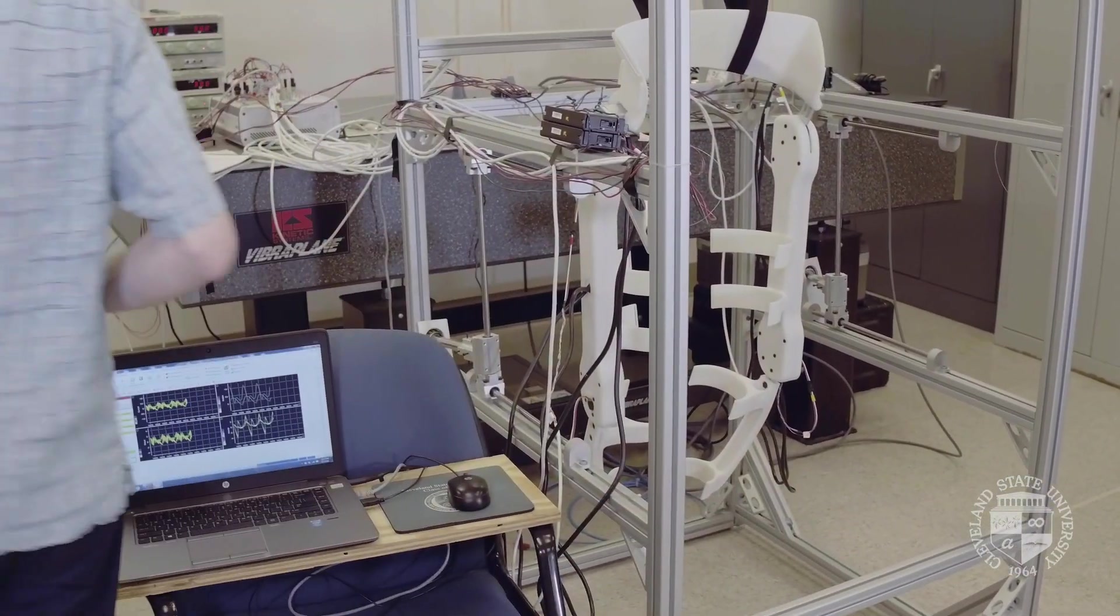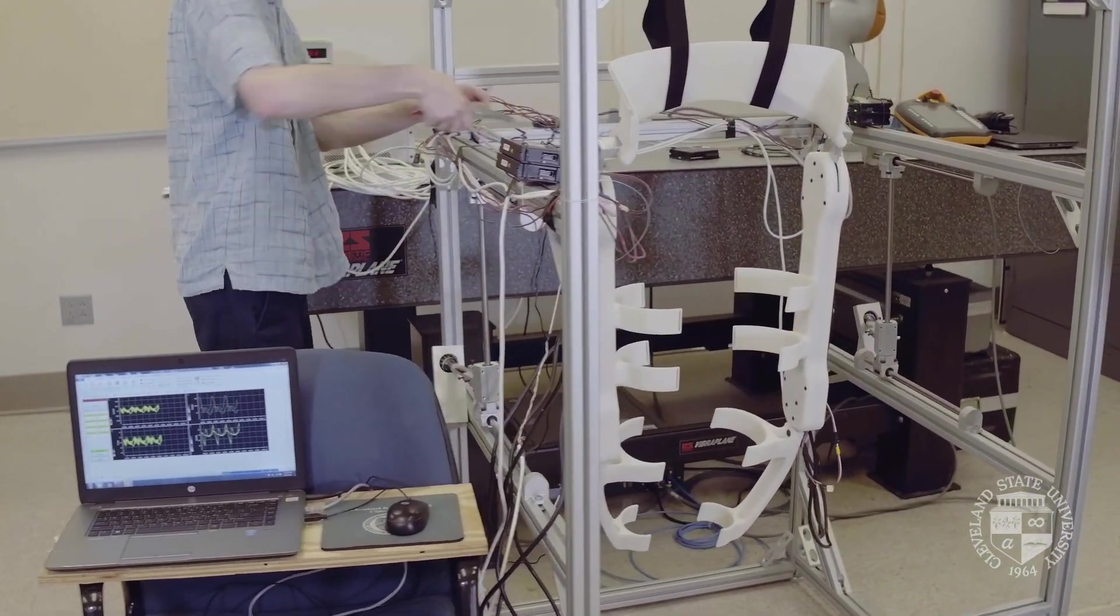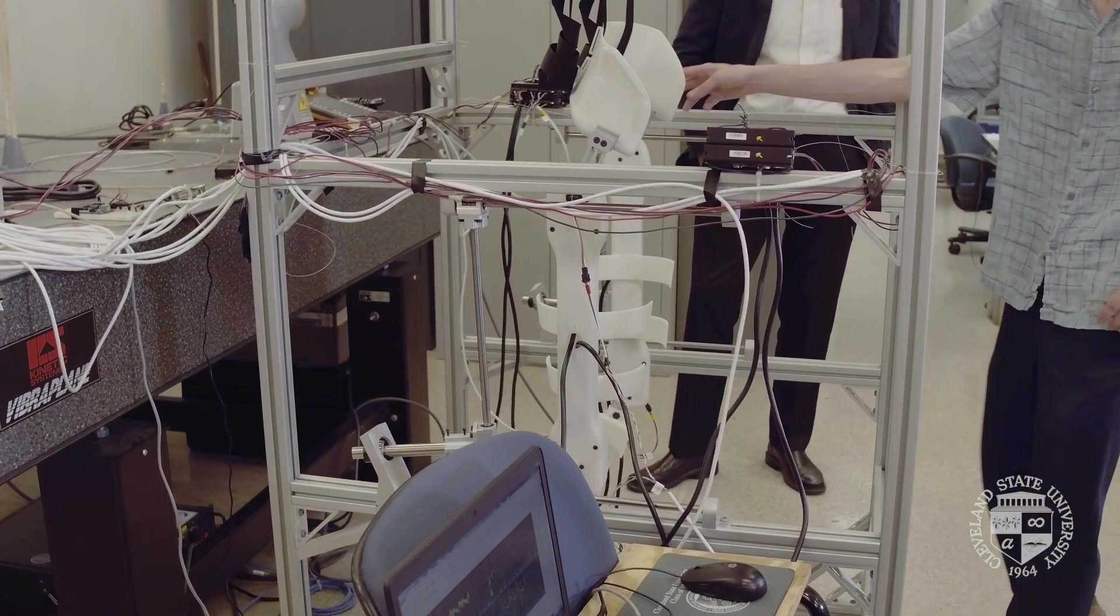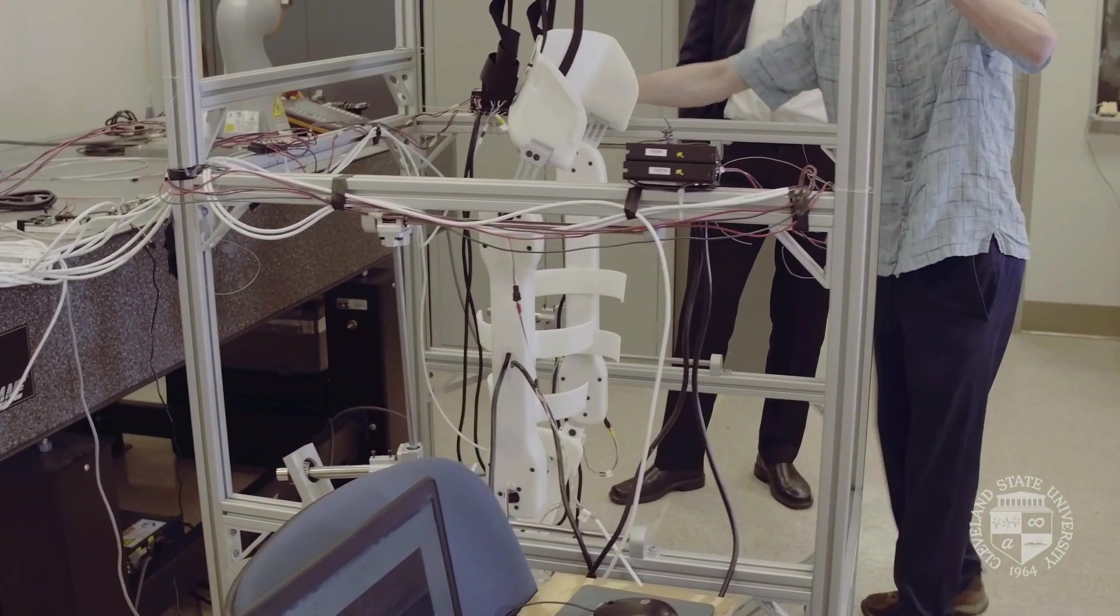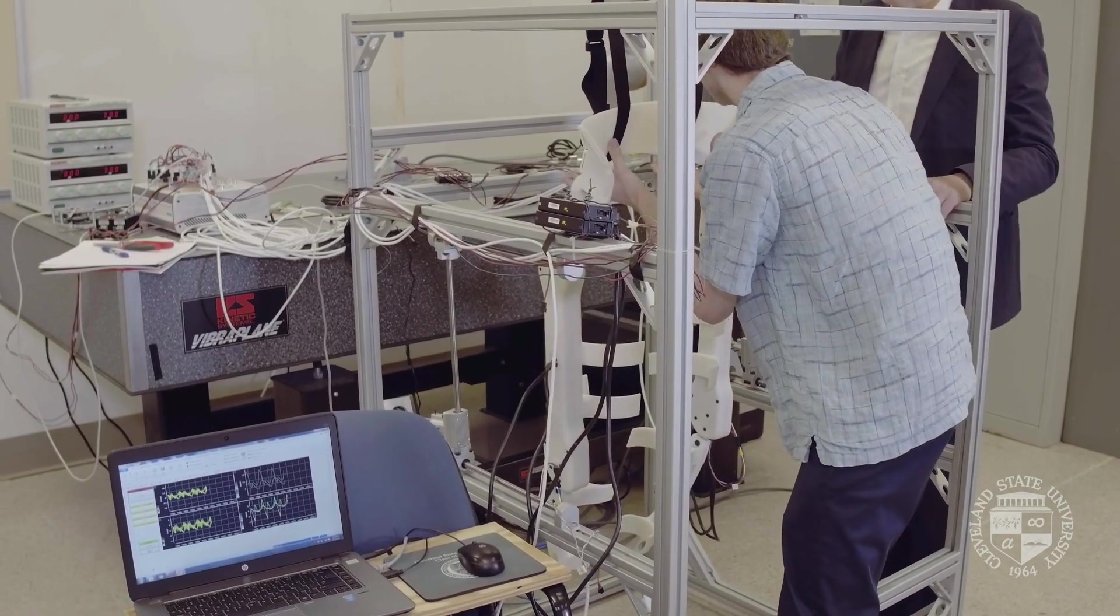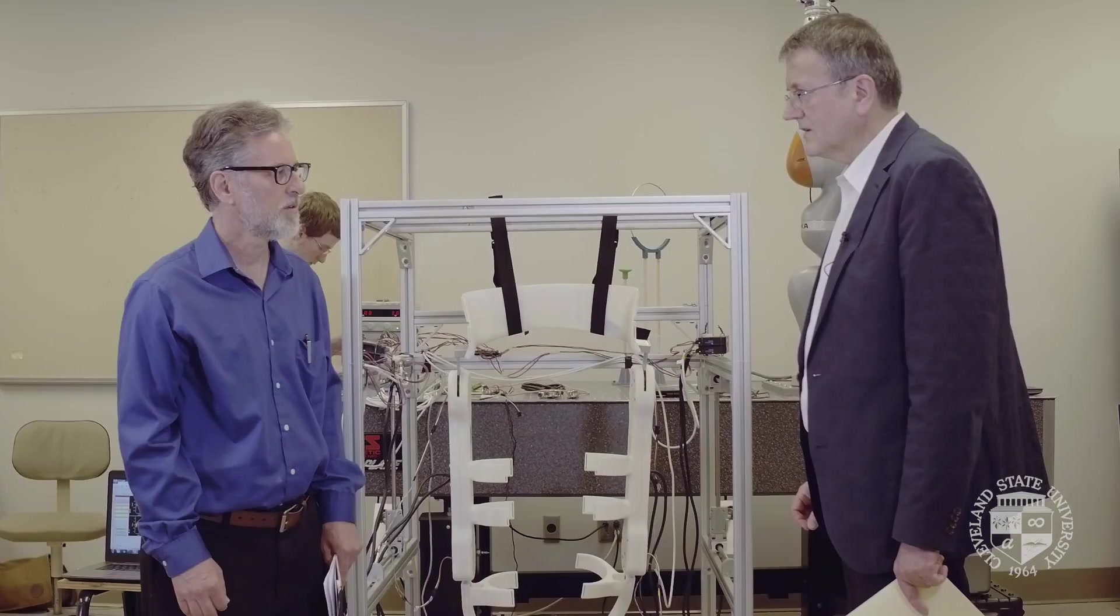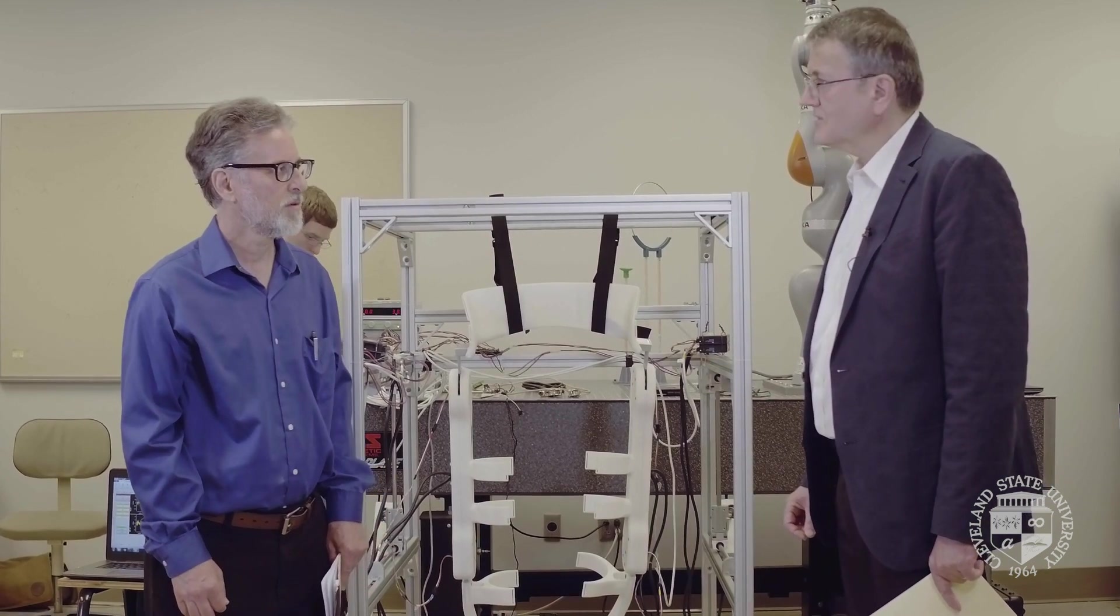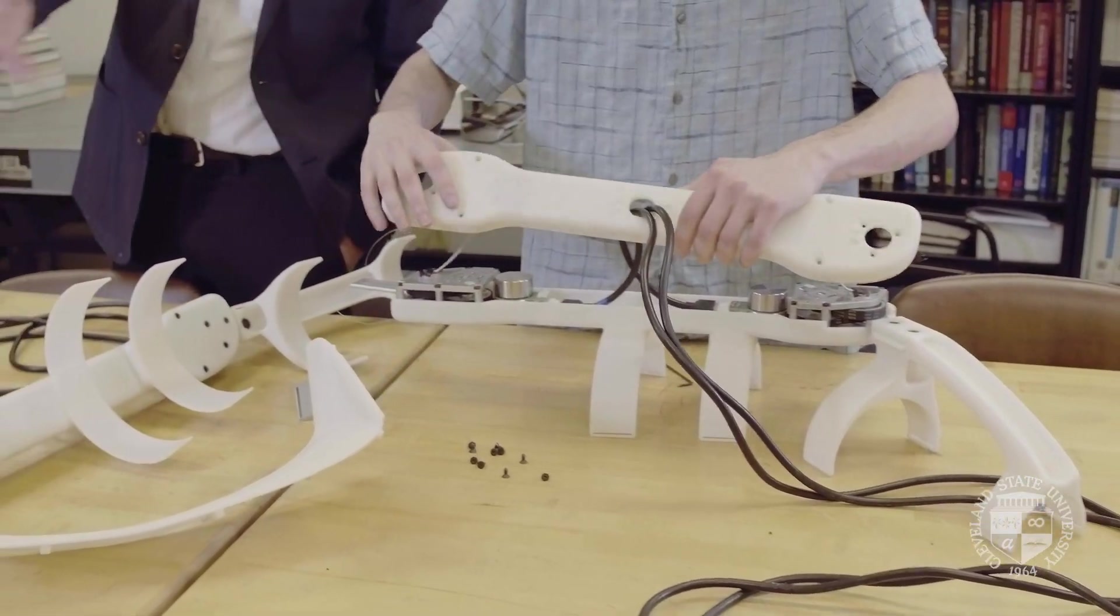Well, children come in a wide variety of shapes and sizes. How can we be sure that the orthosis will fit all the children in this age range? So, each orthosis will be customized based on the anatomy of the individual child. We will manufacture a frame with a three-dimensional printer.